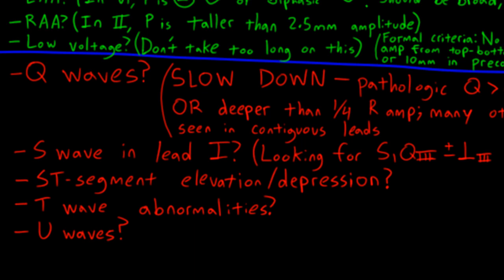Next, I look for an S wave in lead 1, which if present clues me in to look for an S1, Q3, T3 pattern, which can be seen with right ventricular pressure overload syndromes, acute or chronic. However, I find that it's usually a nonspecific finding. If you wanted to skip a step from this algorithm, I think it's okay to skip this one.